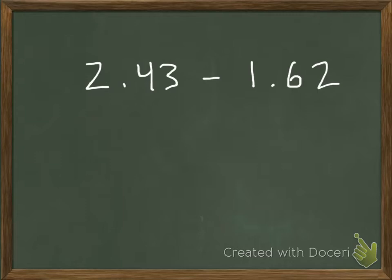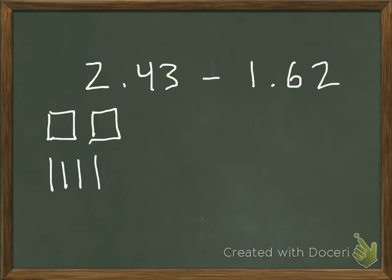Okay, so this is what your problem should have looked like. You should have represented the 2 wholes, the 4 tenths, and the 3 hundredths — and it should have looked like that. You should have subtracted by starting with the smallest place, taking away 2 hundredths from the 3 hundredths. You would be left with 1 hundredth, so your answer should have a 1 in the hundredths place.